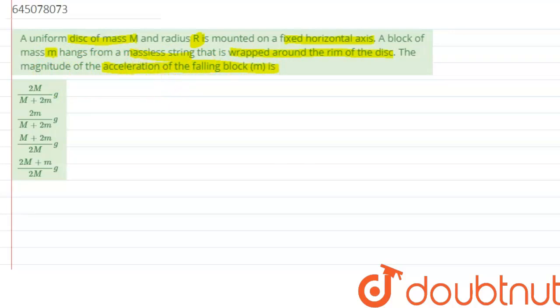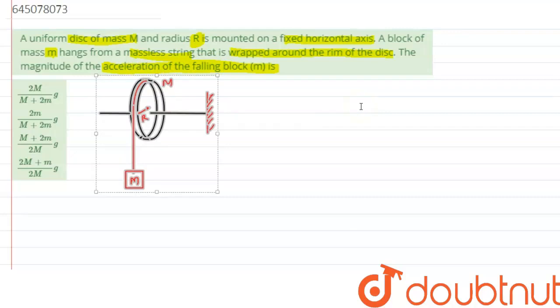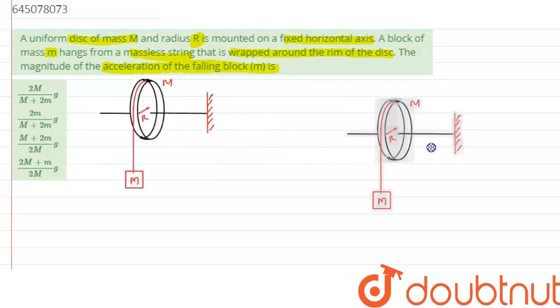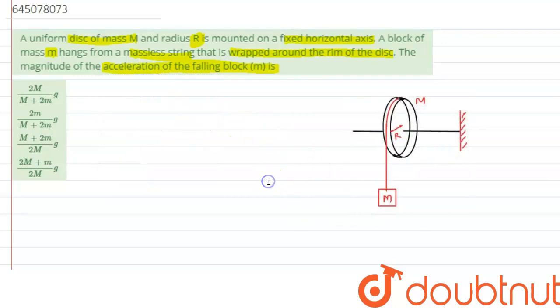Let's try to understand the given question with the help of a diagram. Here we can see the disc is mounted on a horizontal axis which is fixed to a wall.